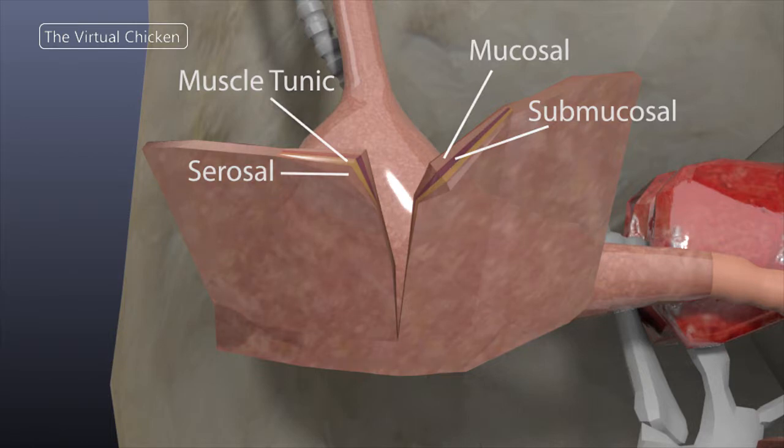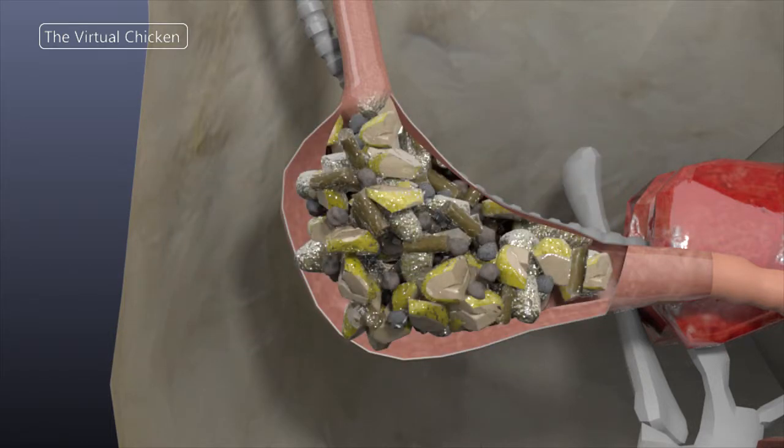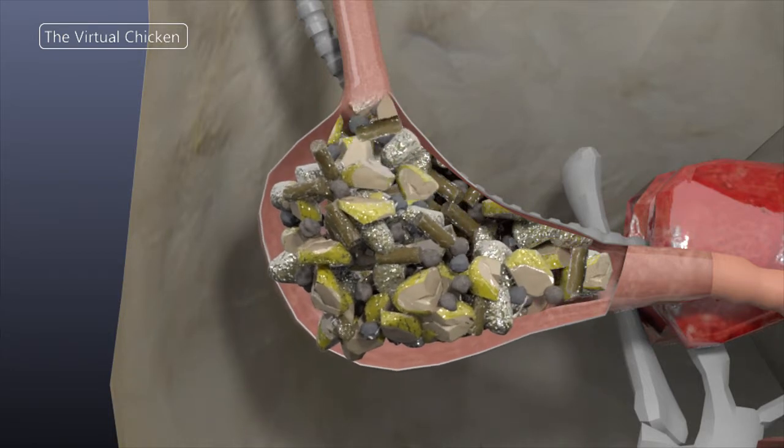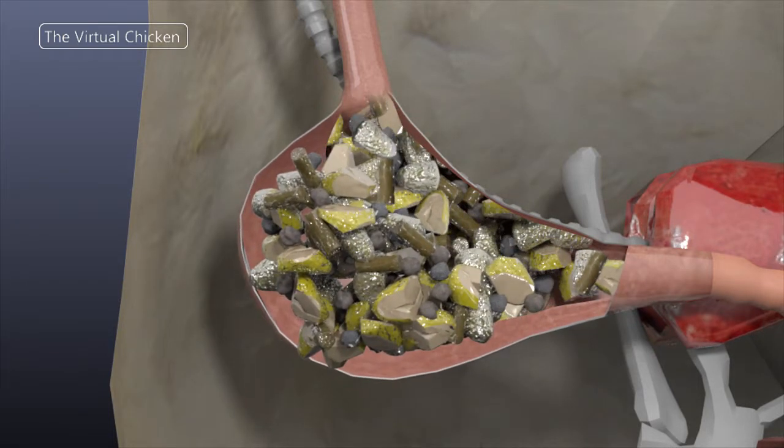The main function of the crop is to hold food in storage until it can be released to the stomach or the proventriculus. The crop fills only after the proventriculus is full.